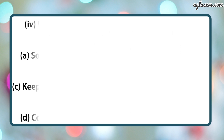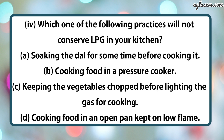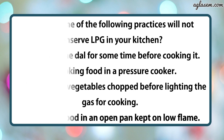Fourth part says: which one of the following practices will not conserve LPG in your kitchen? Options: (1) soaking the dal for some time before cooking, (2) cooking food in a pressure cooker, (3) keeping vegetables chopped before lighting the gas, (4) cooking food in an open pan kept on low flame. The answer is D — cooking food in an open pan kept on low flame.